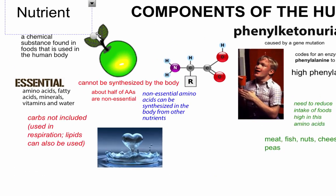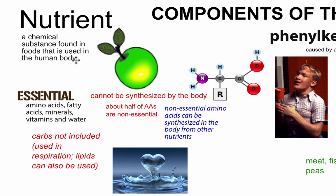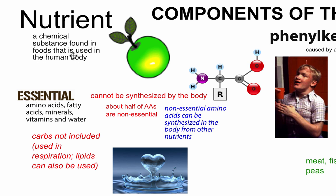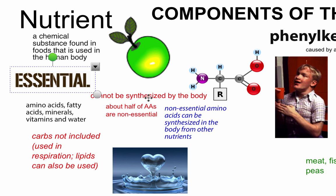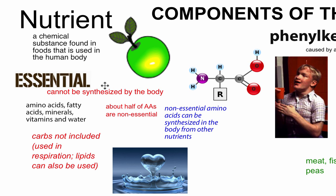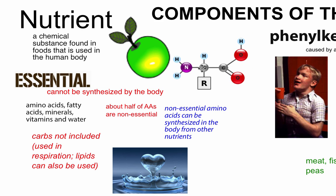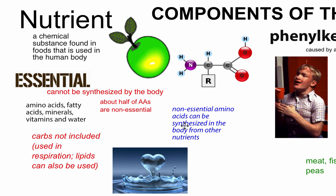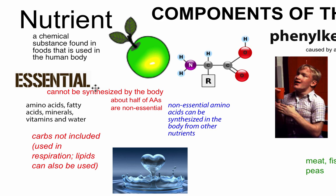We've got to start with nutrients. Nutrients are things that we have to take in — chemical substances found in food that are used in the human body. Many of these things we can actually make ourselves, but if we can't make them, we call them essential. Essential nutrients are things that cannot be synthesized by the body. There are 20 amino acids that we need to stay alive. About half are non-essential, meaning we can make them inside our body, and the other half are essential — we have to take them in through food.